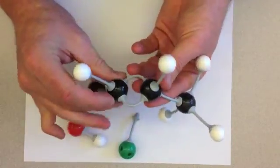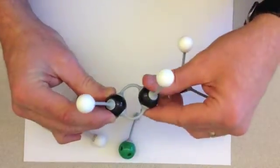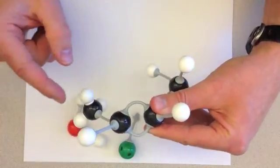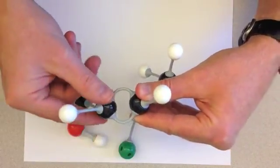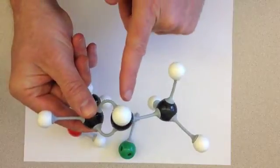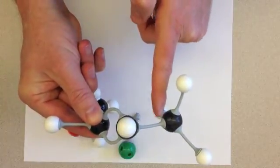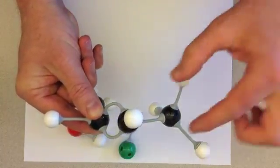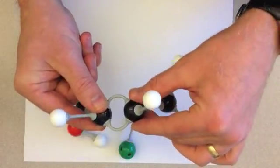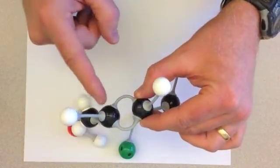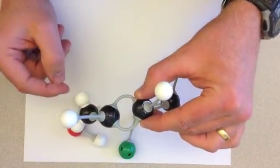As you see, this alkene that we have formed is a more highly substituted alkene than what we would have formed if we had removed a proton from this other beta carbon. If we had a double bond here instead, this would be less highly substituted. And therefore, the major product is typically the more highly substituted alkene.